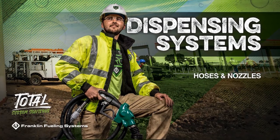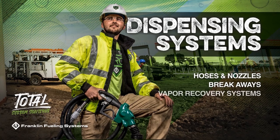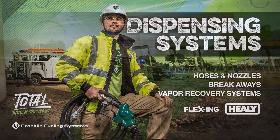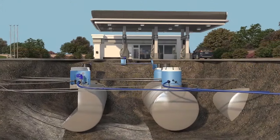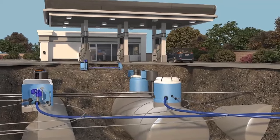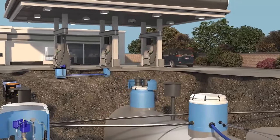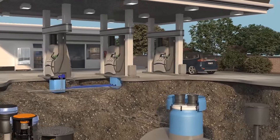Fuel, on its journey to the vehicle's gas tank, must finally travel through dispensing systems products, or sometimes referred to as hanging hardware. These products include hoses, nozzles, breakaways, and in special situations where vapors are captured, vapor pumps.